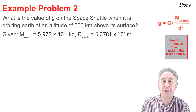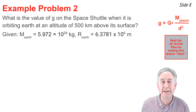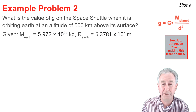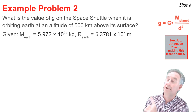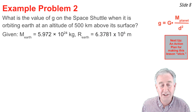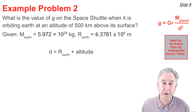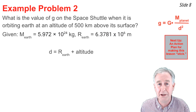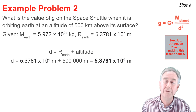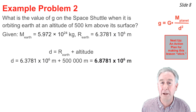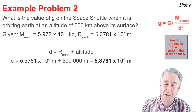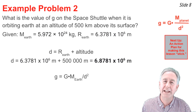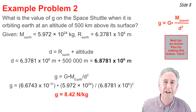In our final example problem, we calculate the value of g on the space shuttle orbiting Earth at 500 kilometers above its surface — approximately 310 miles up. The mass and radius of the Earth are given. To find g, I need the distance from Earth's center to the shuttle, which is the radius of the Earth plus 500 kilometers (converted to 500,000 meters). Substituting into the equation along with Earth's mass gives g ≈ 8.4 N/kg.